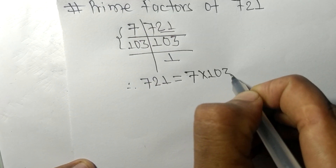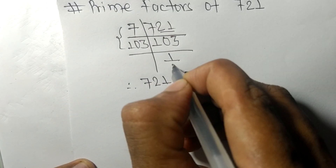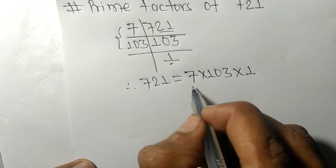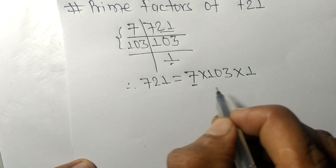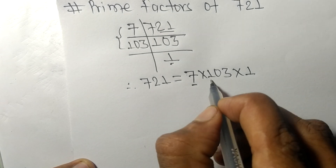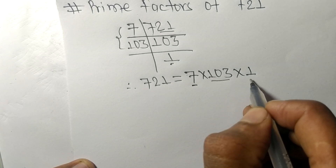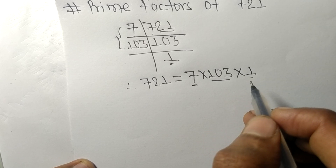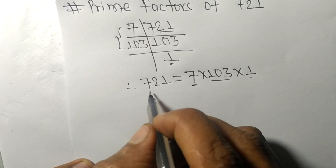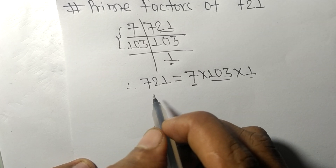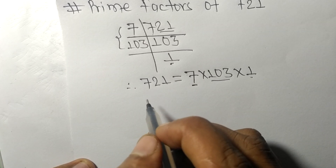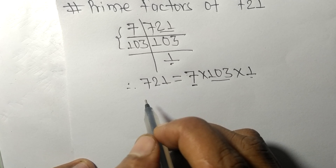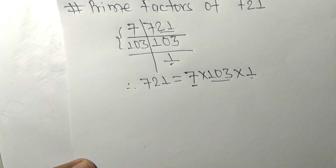...103, and from here it is 1. So 7, 103, and 1 are the prime factors of 721. That's all for today, and thanks for watching.